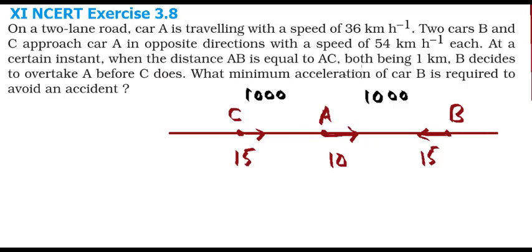It is asked what minimum acceleration B should have to overtake A before C does. But look at this diagram — A and B are coming in opposite directions, so B can definitely meet A before C. The distance between A and B decreases faster. A and B have a relative speed of 25, but C and A have a relative speed of only 5. So B approaches A five times faster than C — B has nothing to do, it can overtake A before C.